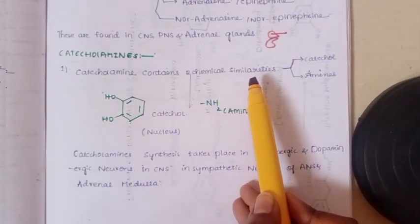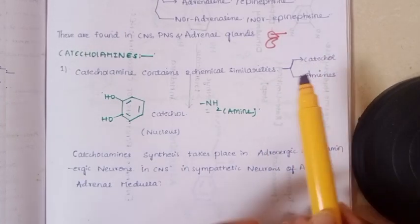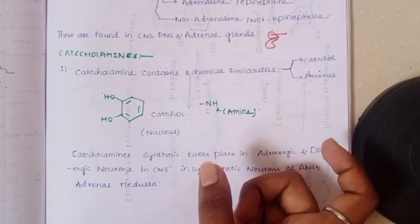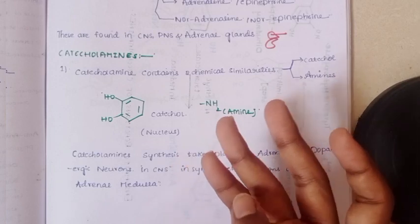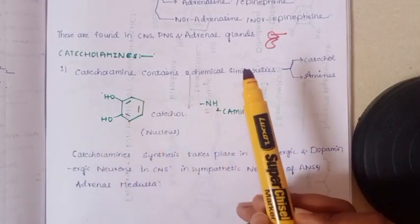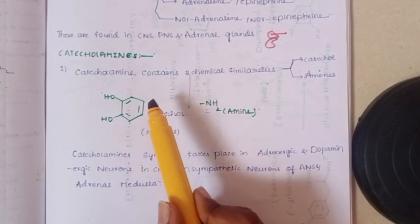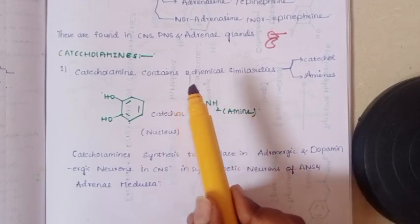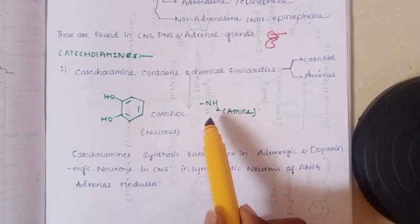Catecholamines contain two chemical similarities. The basic structure of catecholamines has two parts: the catechol nucleus, which is the main nucleus, and an amine functional group. Whether it is dopamine, noradrenaline, or any other drug in this class, the basic structure always contains the catechol ring and the amine group — both must be present.